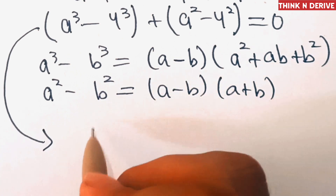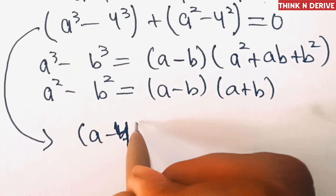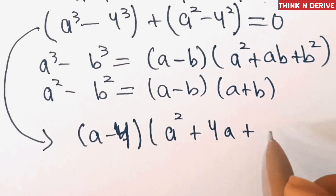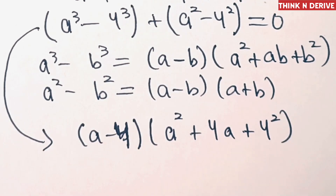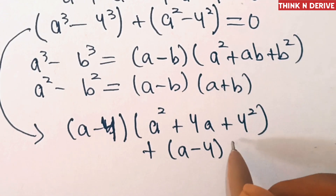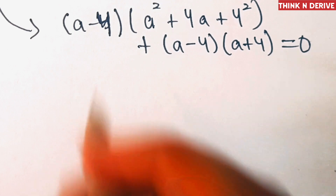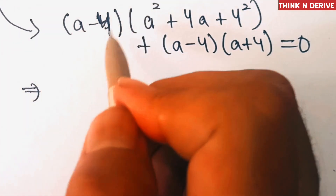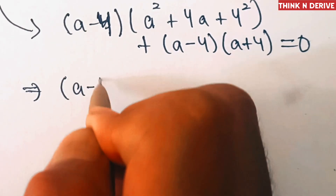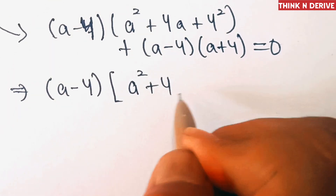Applying these identities with b = 4, the equation becomes (a − 4)(a² + 4a + 16) + (a − 4)(a + 4) = 0. Since (a − 4) is common, we take it out as a common factor.